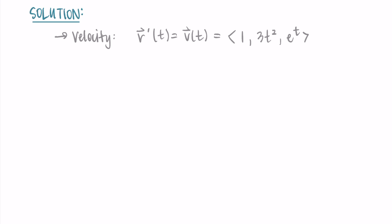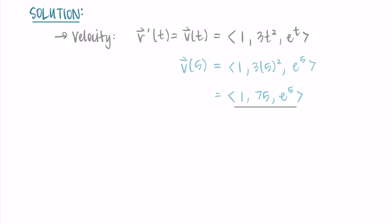To find the velocity at t = 5, we substitute 5 in for t: the velocity at 5 is ⟨1, 3(5²), e⁵⟩. Simplifying, our velocity is ⟨1, 75, e⁵⟩.